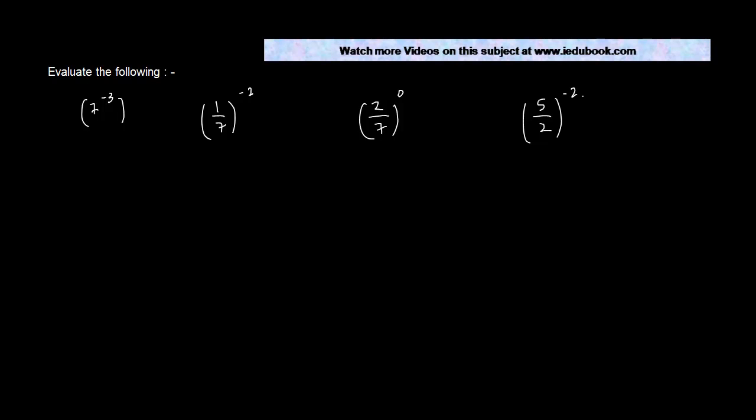Evaluate the following. Okay, so we are given various rational numbers with different sets of power and we have to evaluate it. Let's do them. These are pretty quick and easy. Seven to the power minus three.